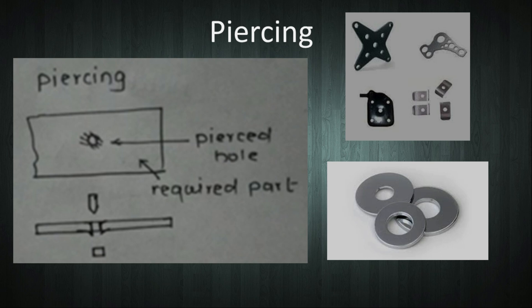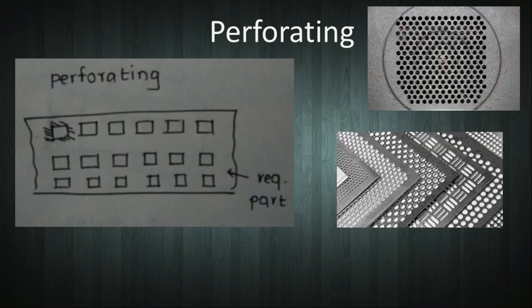The next operation is perforating. Perforating means producing multiple holes close together, generally other than round shape, in a sheet. Perforating operation is shown in the figure. A variety of perforated shapes can be produced by this method.